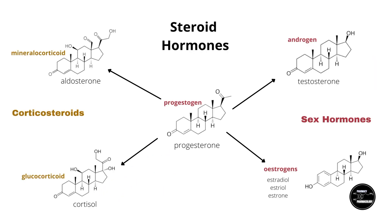I've already gone over the different steroid hormones in a previous video, but to briefly recap: steroid hormones all have the signature cholesterol-derived four-ring backbone, and there are five types. The mineralo- and glucocorticoid steroid hormones are synthesized via a progestin first, and of the sex hormones there are the progestogens, estrogens, and androgens. The pathway of synthesis is such that all steroid hormones are converted into a progestin first before being converted to their final form.